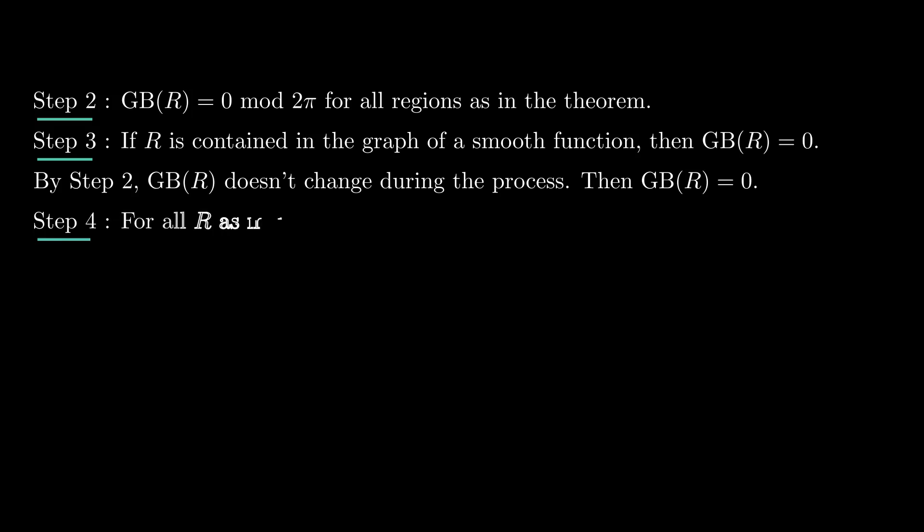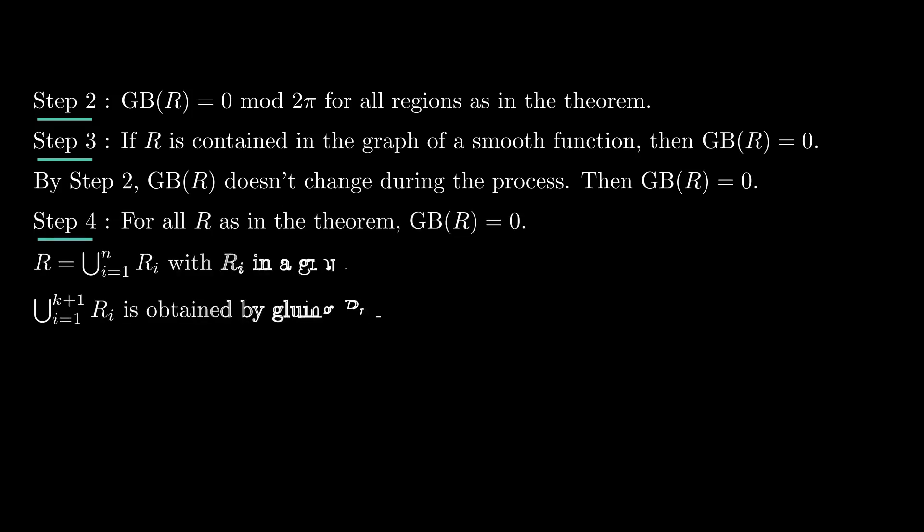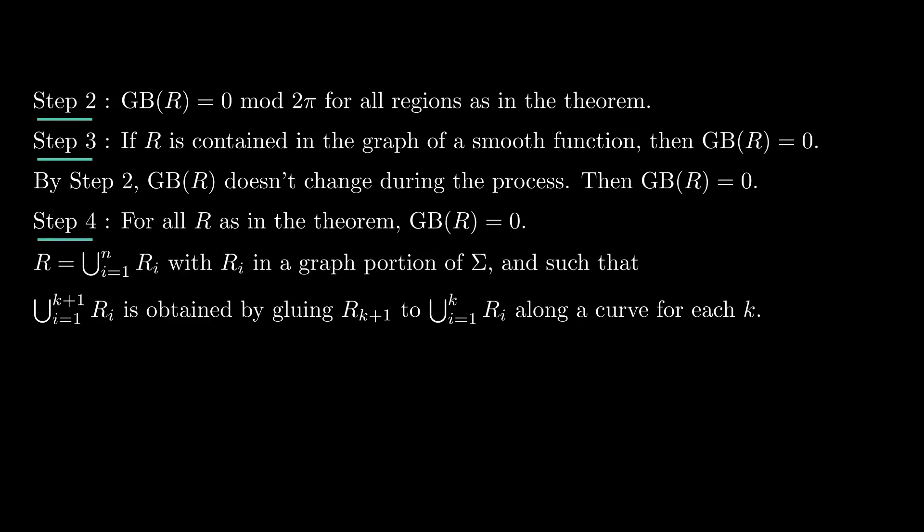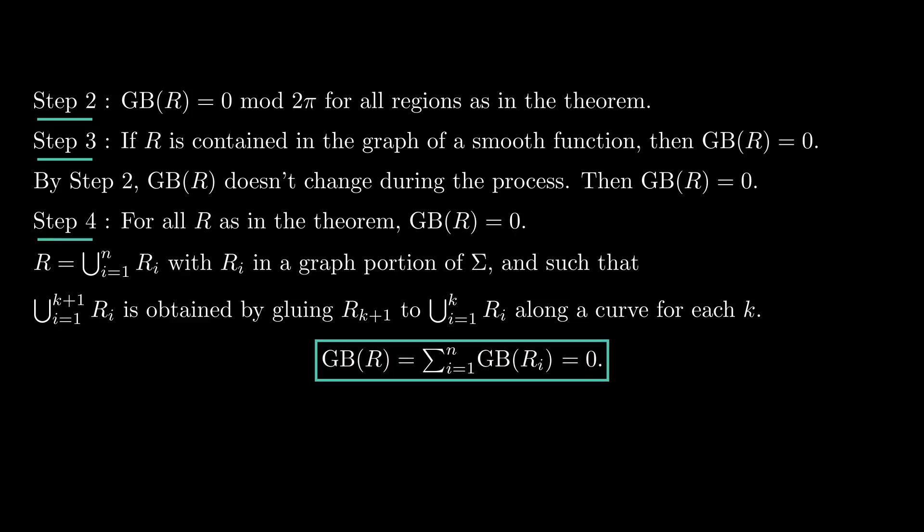The final step is done by combining step 3 with the additivity property. For any region R, we break it into small pieces so that each piece is contained in a portion of sigma where step 3 holds, and we recover R by assembling the pieces one by one using the additivity property. Notice that for this we actually need the region R to be homeomorphic to a disk. In each piece, GB equals 0 by step 3, and then by the additivity property, GB equals 0. This finishes the proof of the Gauss-Bonnet formula.